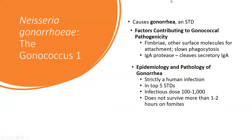Neisseria gonorrhoeae causes gonorrhea or an STD. Factors contributing to its virulence include fimbriae — it can stick to mucous membranes really well — it can slow down phagocytosis, and it has IgA protease so it can break down IgA antibodies, avoiding being tagged by those mucosal antibodies and breaching part of that mucosal innate immune system. It's strictly a human infection and is a top-five STD.